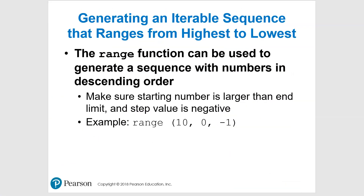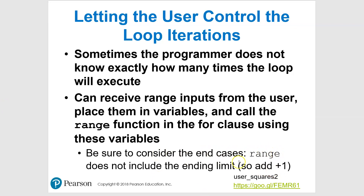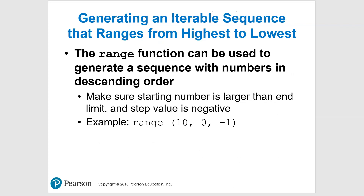We can also count down. For example, range(10, 0, -1) — this says start at ten, go down to zero by minus one. So this is our countdown. You may want to count down — maybe you have a timer starting at ten minutes and want to show nine, eight, seven, all the way down. This is one way to do that.